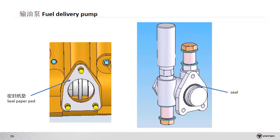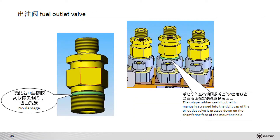The fuel delivery pump is the low-pressure pump. Its function is to draw fuel out of the fuel tank — pay attention to the seal gasket. The fuel outlet valve is the component connecting the injector and the high-pressure fuel pump. Be careful of damage to the seal ring during installation. If the seal is damaged, fuel will leak and the injector will not work, leading to engine shaking or low power.